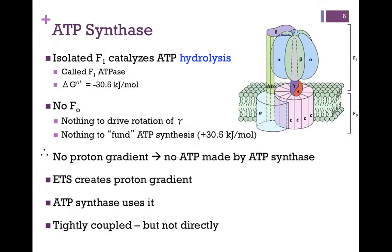The electron transport system creates the proton gradient; the ATP synthase uses it. They're tightly coupled, but not directly. It's akin to what we saw in Chapter 9 in the case of secondary active transport — one transporter sets up the gradient, another one uses it. In this case, the electron transport system sets up the proton gradient, and the ATP synthase uses it.